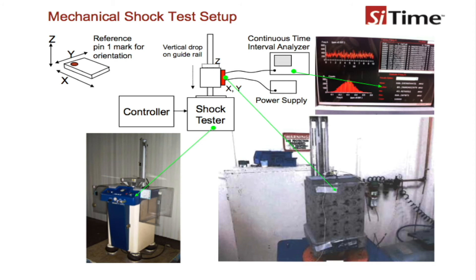The frequency deviation before, during, and after mechanical shock was applied to the oscillator in X, Y, and Z directions was recorded. The mechanical shock impulses were generated by test slab equipment per specifications of MIL standard 883F with a 1 microsecond half-sine wave shock pulse and a peak acceleration of 500 G's.